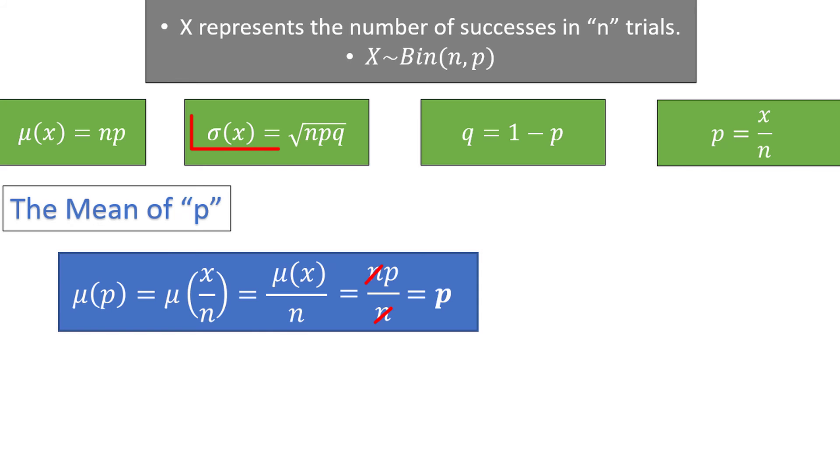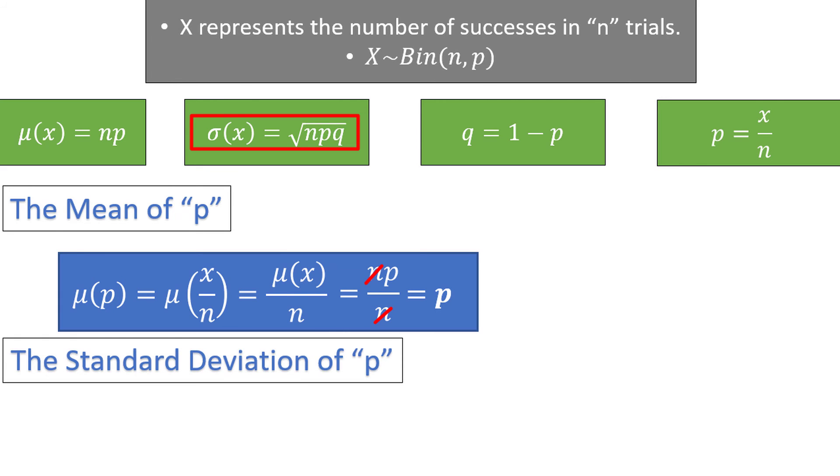Now the standard deviation of x is the square root of n times p times q. Again, I'm using sigma parentheses to represent the standard deviation of some value, and not multiplication. So the standard deviation of p is the standard deviation of x divided by n, which is just the square root of n times p times q divided by n. Through a few steps, we find that the standard deviation of p is the square root of pq divided by n. This is a very important quantity, and will show up many times throughout the formulas we will be using relating to proportions.